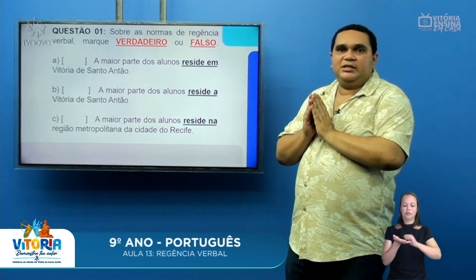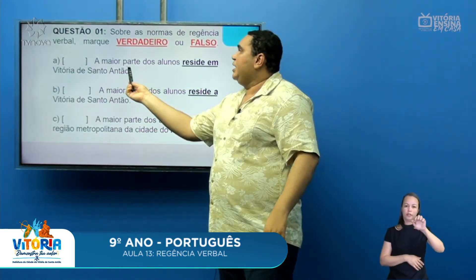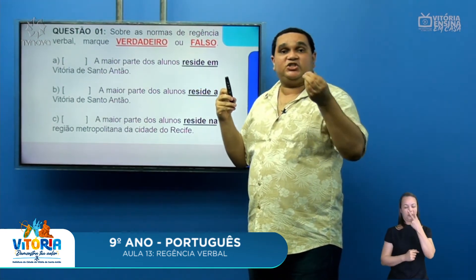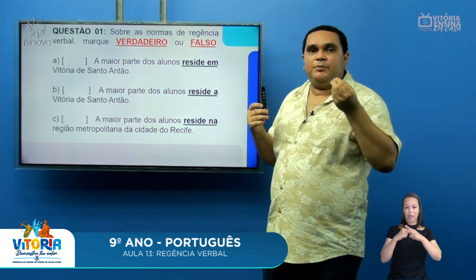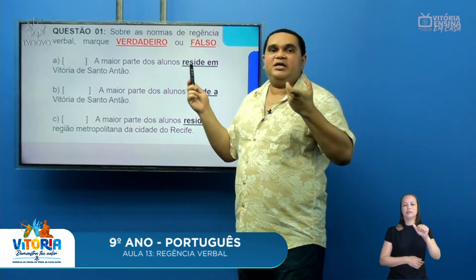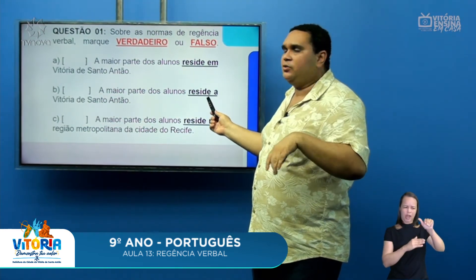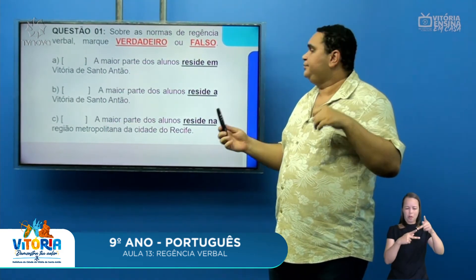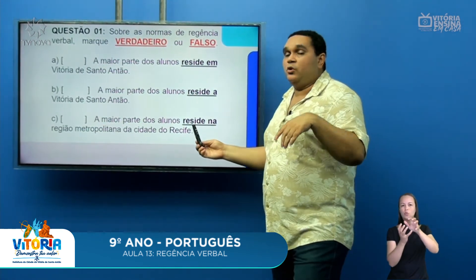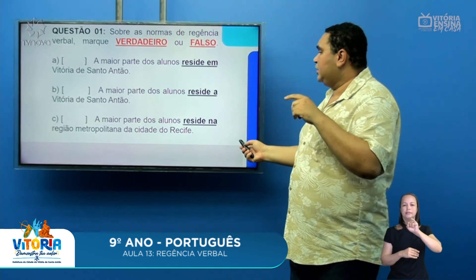Agora algumas atividades sobre as normas de regência — marque verdadeiro ou falso. Letra A: 'A maior parte dos alunos reside em Vitória de Santo Antão.' Está verdadeira, porque com os verbos morar ou residir, eu sempre vou utilizar a preposição 'em', 'no', 'na', 'nos' ou 'nas'. Letra B: 'A maior parte dos alunos reside a Vitória de Santo Antão.' Está falso, porque com o verbo residir eu nunca vou utilizar a preposição 'a'. Letra C: 'A maior parte dos alunos reside na região metropolitana do Recife.' Está verdadeiro — com morar ou residir, sempre usamos 'em', 'na', 'nas', 'no' ou 'nos'.